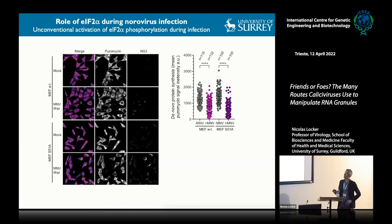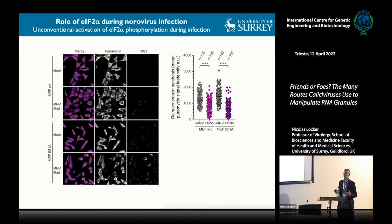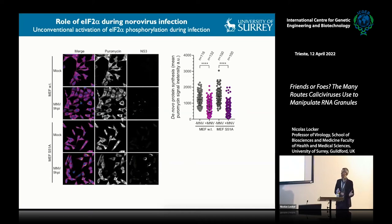In cells unable to phosphorylate EIF2-alpha but infected with MNV, we could still detect a strong translational shutoff. This tells us that stress sensing via EIF2-alpha is not critical for protein synthesis shutoff—it's non-canonical and perhaps related to a different outcome of intracellular signaling rather than protein synthesis.